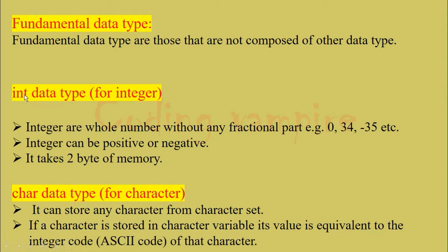Okay, so the first fundamental data type that we are going to discuss is integer. Integers are whole numbers without any fractional part. Example: 0, 34, and they can even be negative numbers like minus 35, etc. Integers can be positive or negative. It takes two bytes of memory.